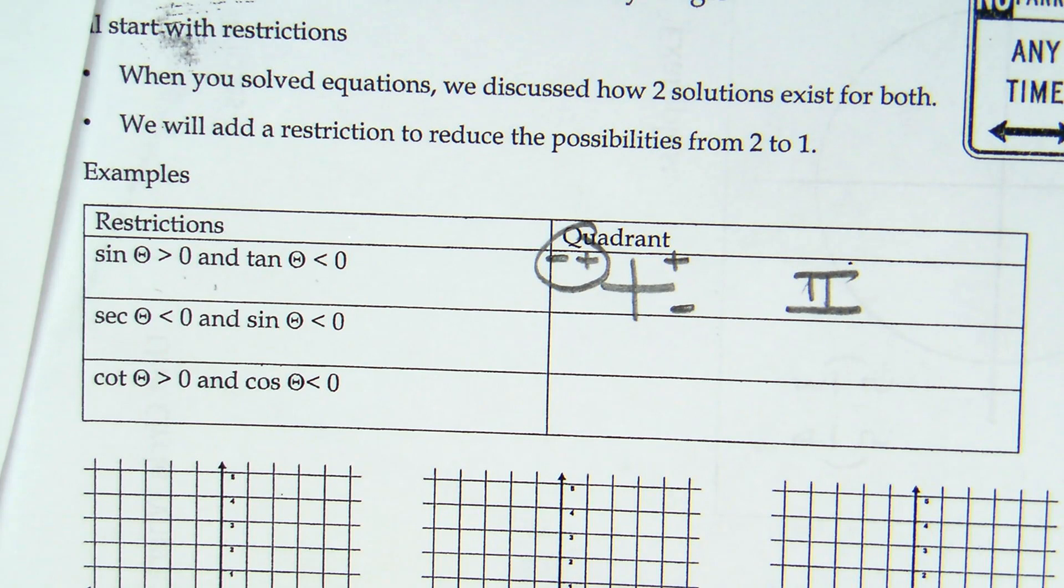Makes sense? So you're just putting both possibilities down, and whichever one shows up twice, that's what you're doing. So go ahead and try the other two.